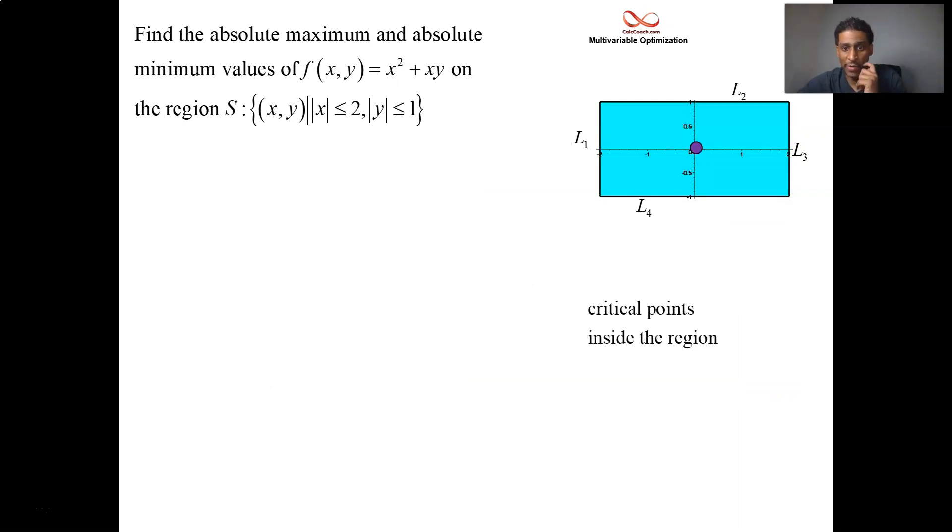Okay, so critical points on the inside, we have the origin. What do you get when you plug the origin in to the function? Zero. Extreme points on the boundary, we had two of them. Negative a half and positive one. Positive a half and negative one. So let's do the negative a half and positive one into the function. Negative a half for x gives you a fourth, and then you take away a half from that. You end up with negative a fourth. And then positive a half and negative one goes in. You also get negative a fourth.